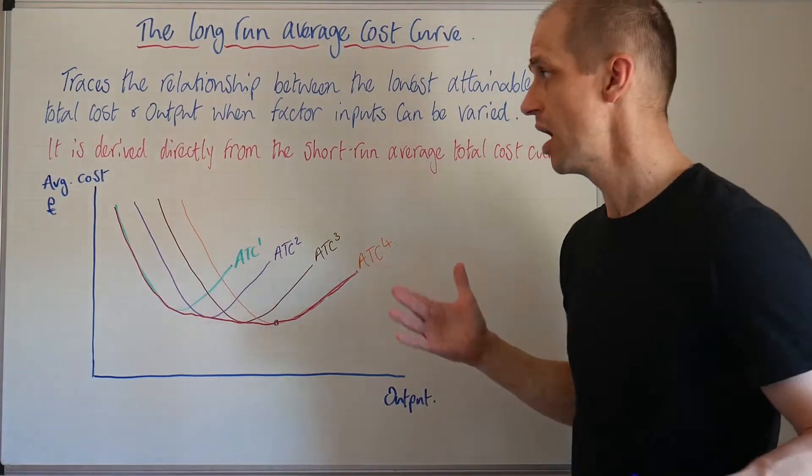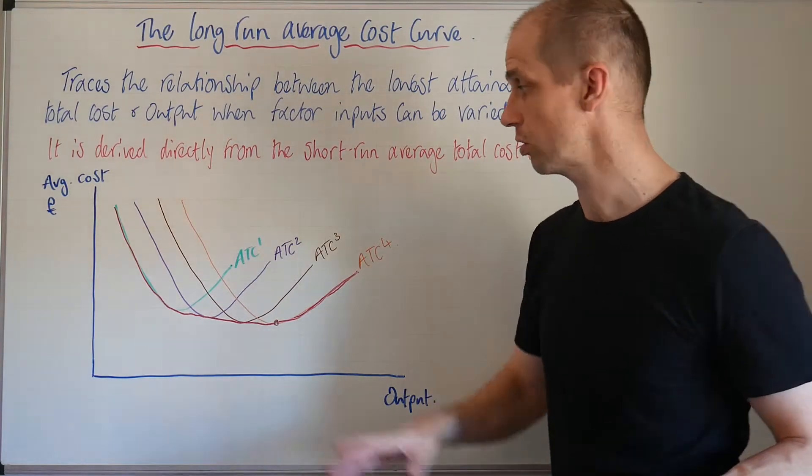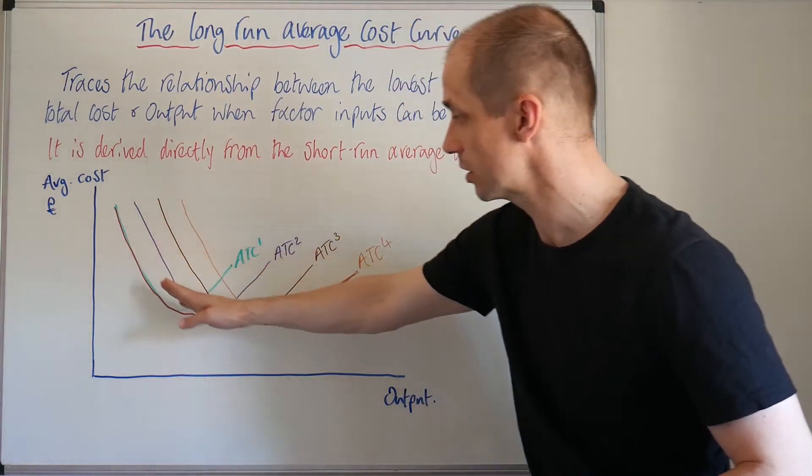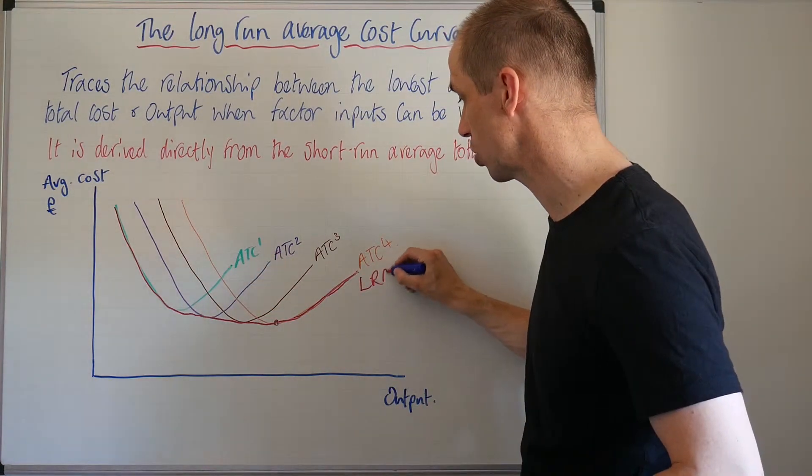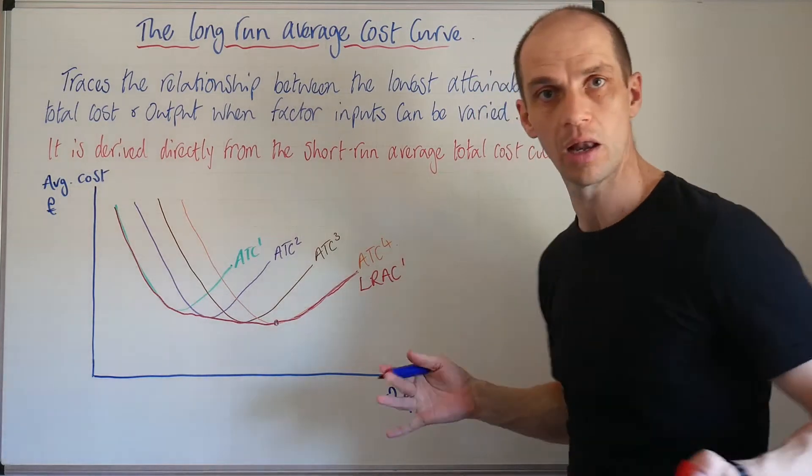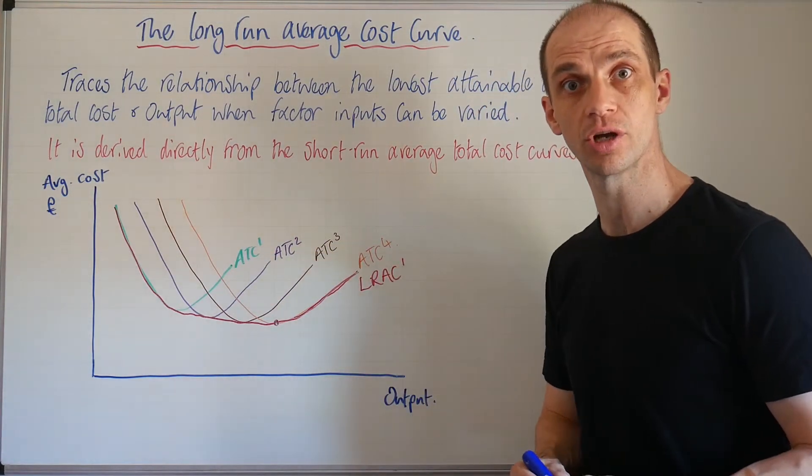It's straightforward - it just utilises each of those independent short run average cost curves. And by tracing those through, we can determine a long run average cost curve. That would be LRAC, whereas all of these would be short run average total cost curves.